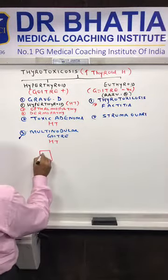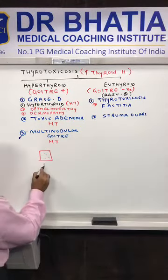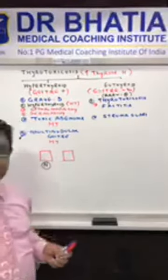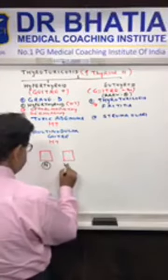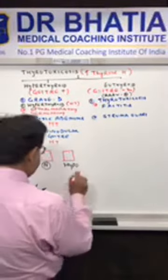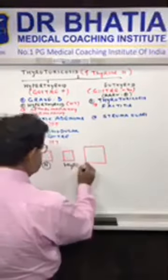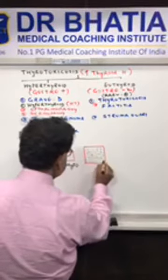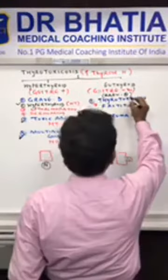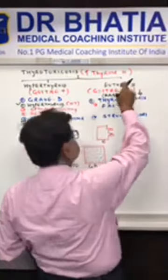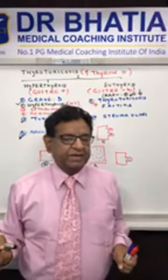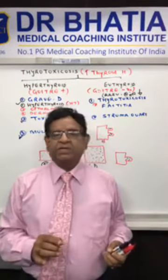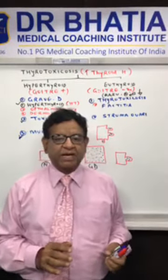If the gland picks up less iodine, it is a case of hypothyroid. If the gland is uniformly enlarged with generalized uniformly increased uptake of radioiodine, that indicates Graves' disease. In euthyroid thyrotoxicosis, radioactive iodine uptake is normal or reduced. So the terms thyrotoxicosis, Graves' disease, and hyperthyroid are not the same - they are all different. Thyrotoxicosis means excess thyroid hormone. Graves' disease is an autoimmune disorder with generalized gland enlargement, eye signs, skin signs, and hyperthyroid. In euthyroid, there is no enlarged gland and the source of hormone is from somewhere else.